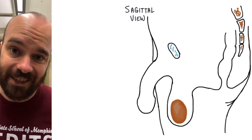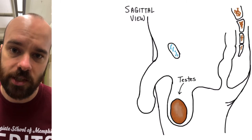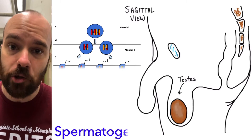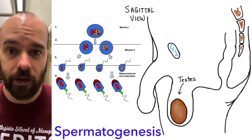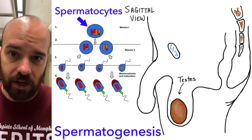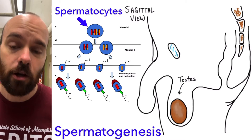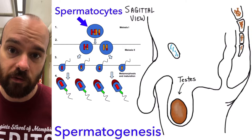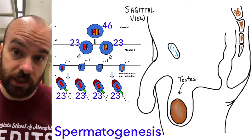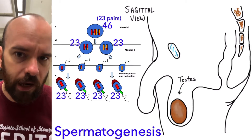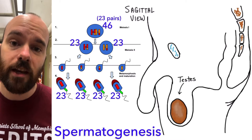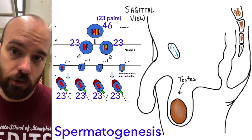The first structure we'll talk about are the testes. The testes are the primary sex organ in the male reproductive system, and they're the site of spermatogenesis, or the creation of sperm cells. Before they technically become sperm cells, these cells called spermatocytes will undergo meiosis, which reduces the number of chromosomes from the normal 46 down to 23. Most cells in the human body have 46 chromosomes, or 23 pairs of chromosomes, but after undergoing meiosis, that number is reduced down to 23 individual chromosomes.